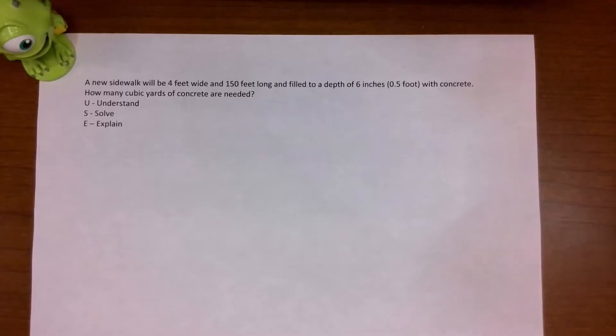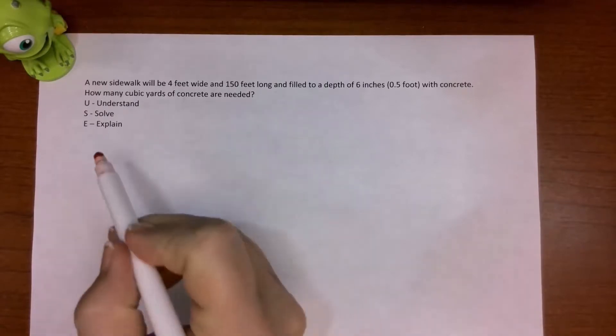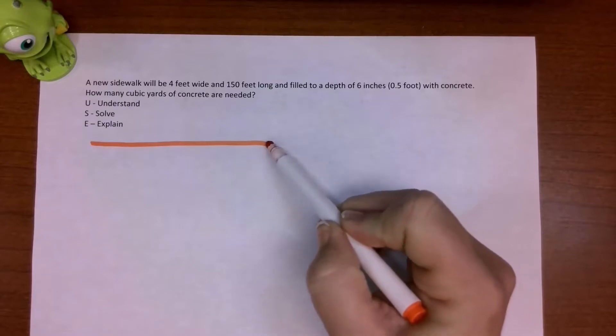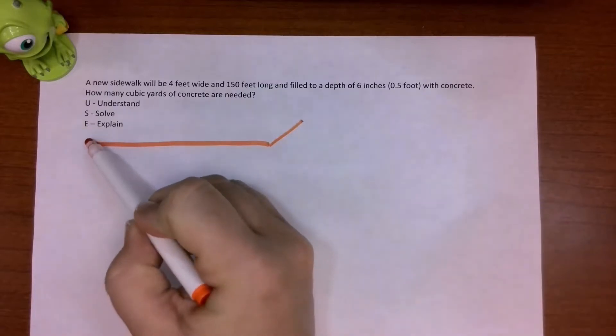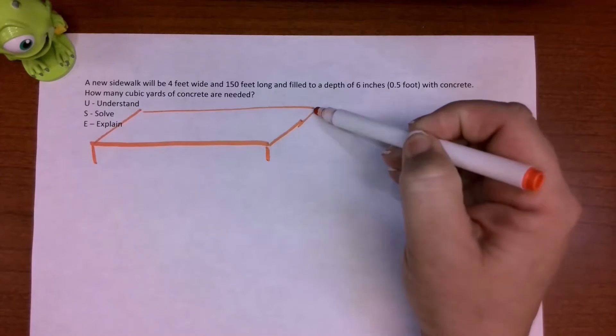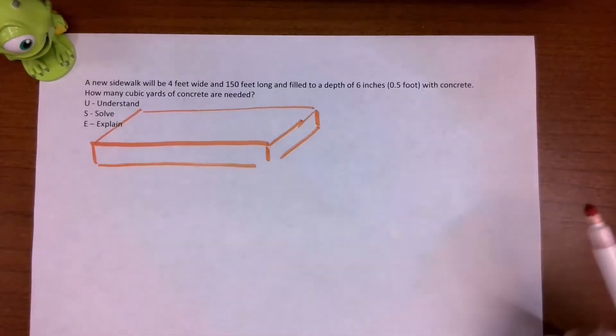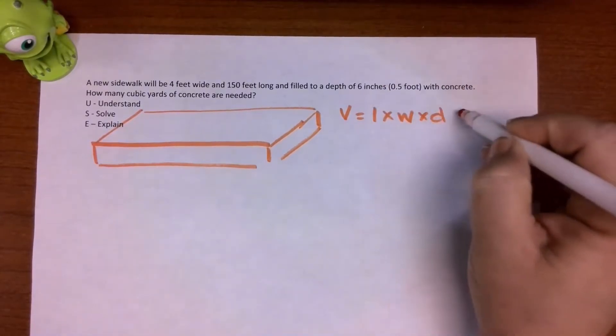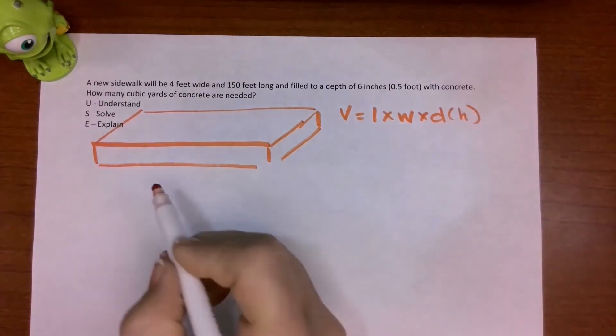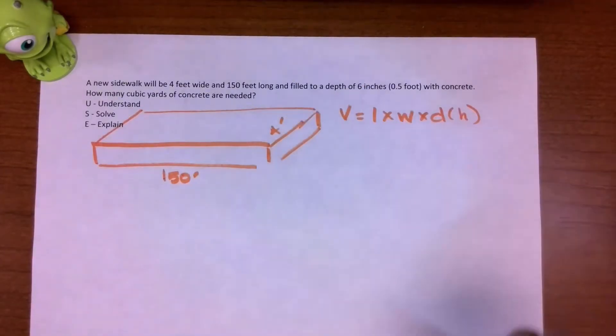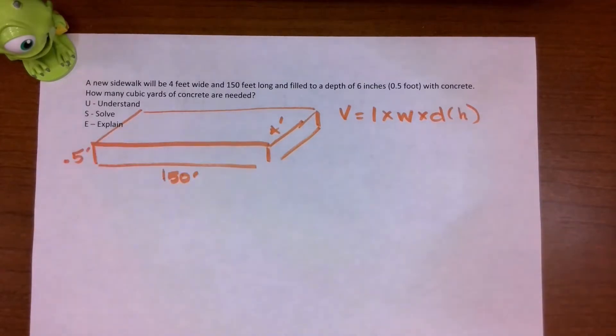Let's solve one last problem. We will need to do some unit conversions. We have a new sidewalk, and it's going to be 4 feet wide and 150 feet long and filled to a depth of 6 inches or a half foot. I'm using this use model: understand, solve, explain. To understand, I'm just going ahead and drawing myself a little picture. Volume is length times width times depth in this case. It really would be height normally. And it's going to be 150 feet. It's going to be 4 feet wide. And then it's going to be a half a foot tall.